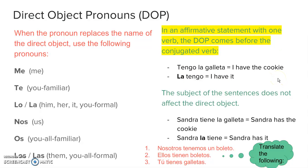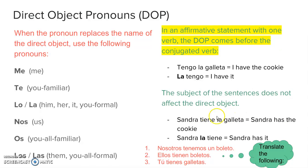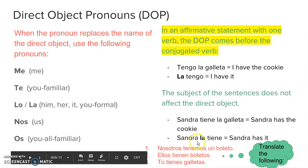The subject of a sentence does not affect the direct object. Remember that subject pronouns are different, so make sure you keep track of those. For example: Sandra tiene la galleta — Sandra has a cookie. To make it simpler: Sandra la tiene — Sandra has it. When I say la, you know I'm talking about a particular cookie mentioned earlier.